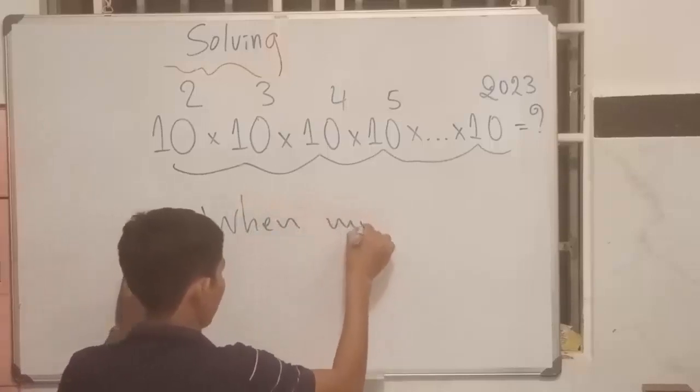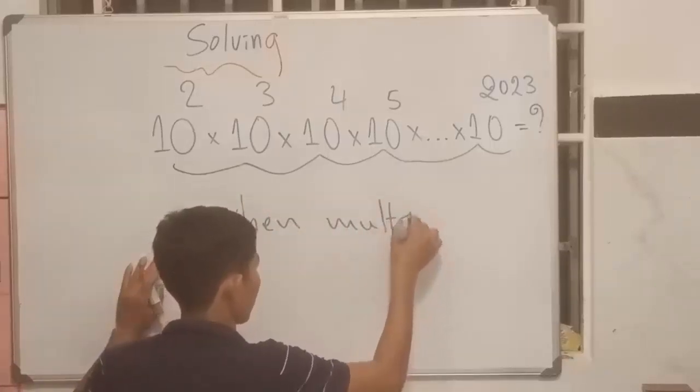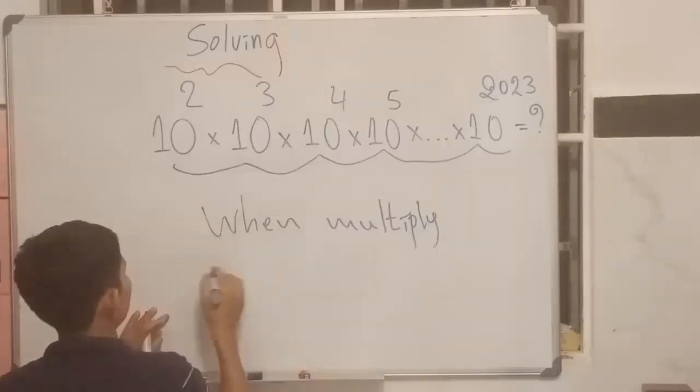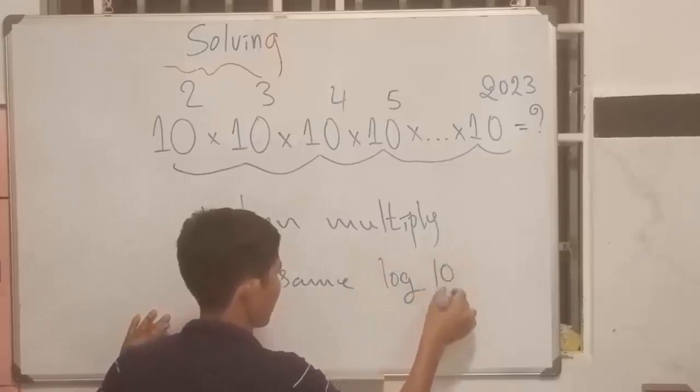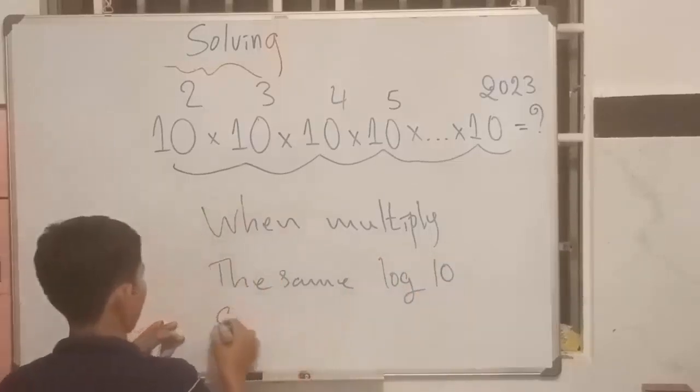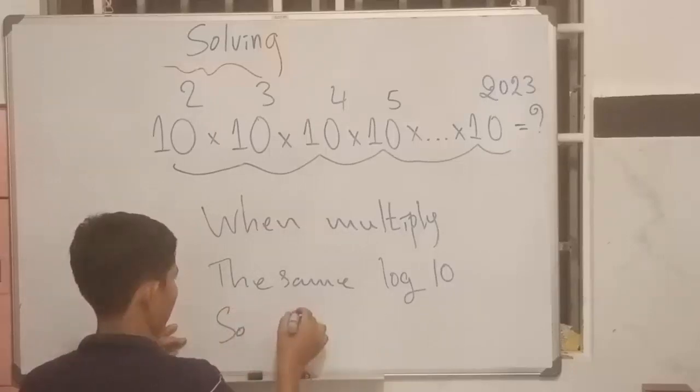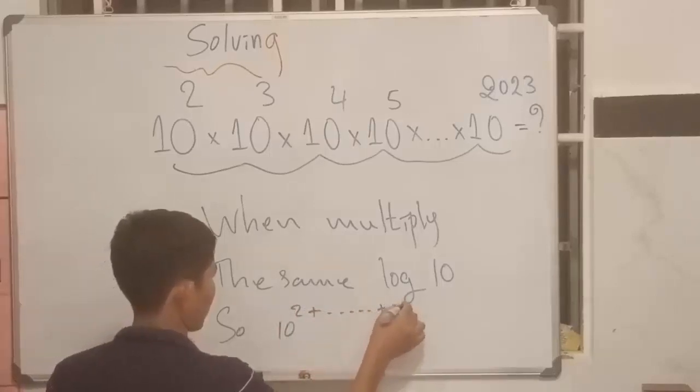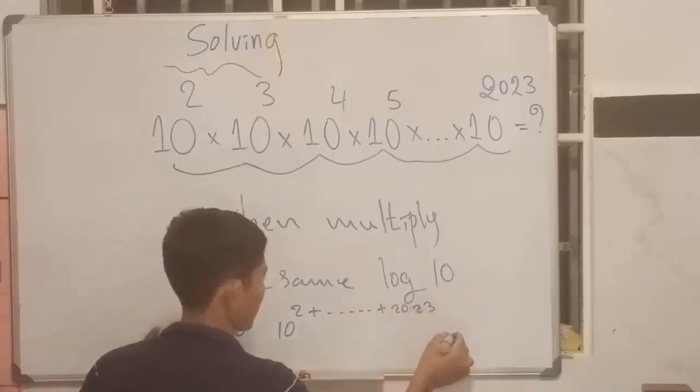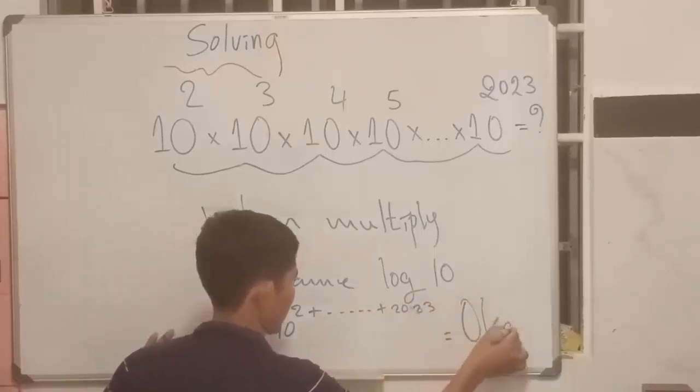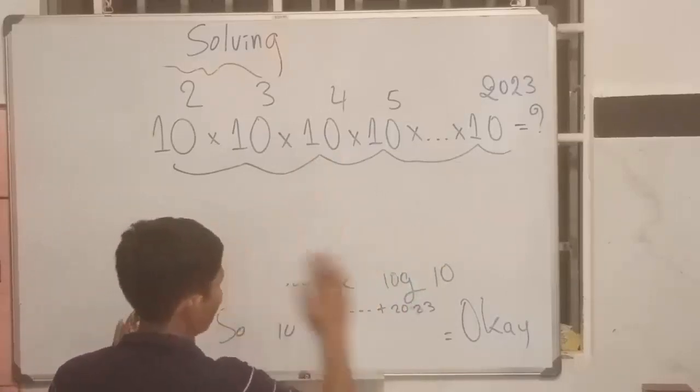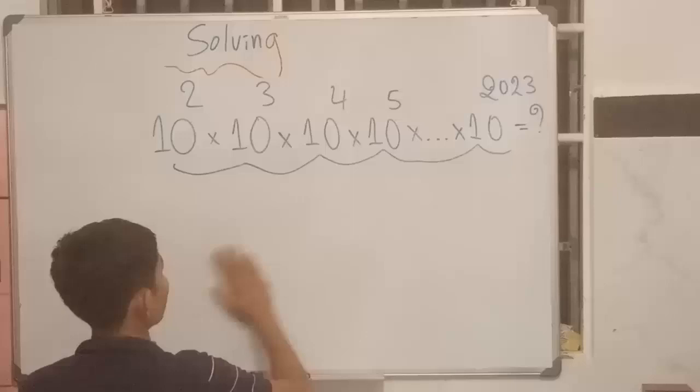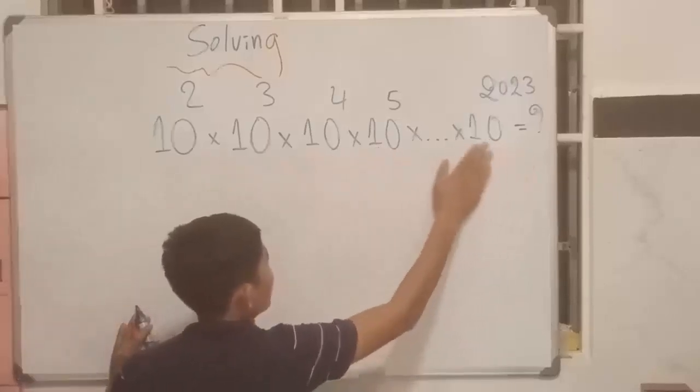When multiply by 10, and the same power 10, about 2, 3, 4, 5, it's important. 10 to the power 2 plus dot dot dot plus 2023. And 10 to the 2, what did you find? So please start, I will show you one by one.